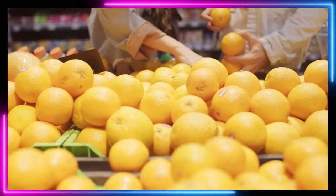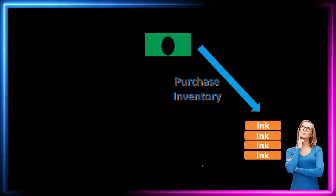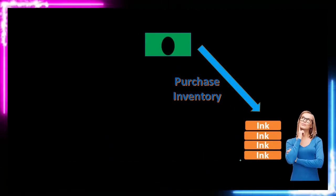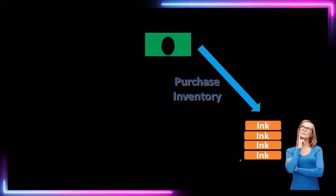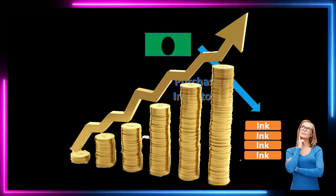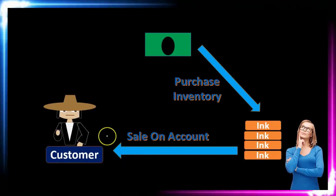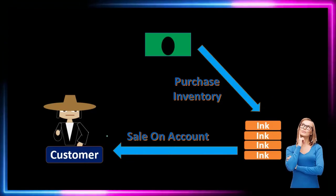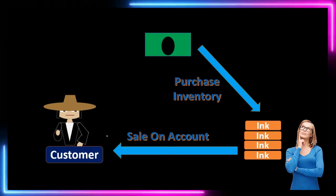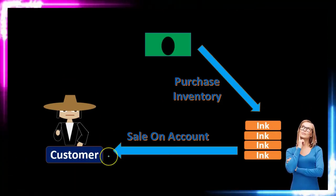As we move from a service company to a merchandising company, the cycle will look something like this. First, we're going to be purchasing inventory — inventory could be anything we purchase for the purpose of reselling in order to generate revenue. Once we have the inventory, at some point we will sell it to a customer. We're going to say here that we make the sale on account, though we could make the sale for cash and receive payment at the point of sale.